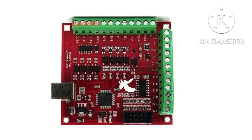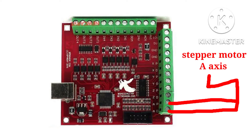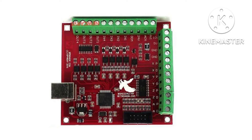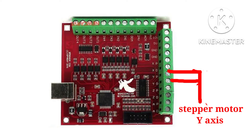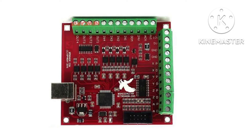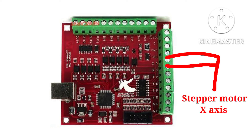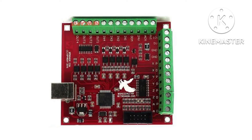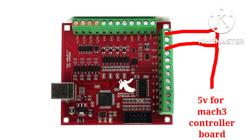These two ports are for the stepper motor A axis. These two ports are for the stepper motor Z axis. These two ports are for the Y axis, and the last two ports are for the X axis. There are also ground and 5-volt ports.